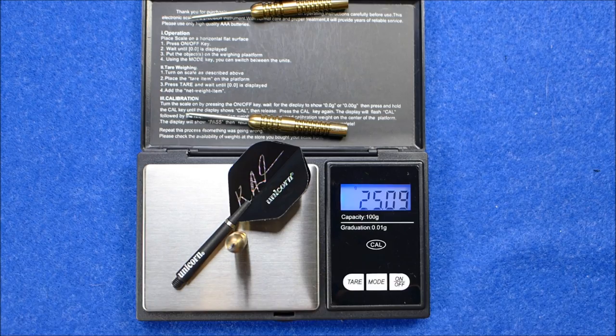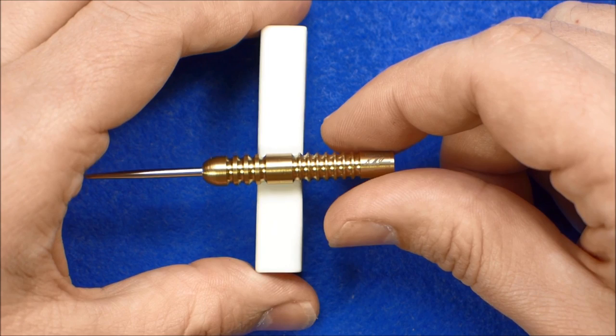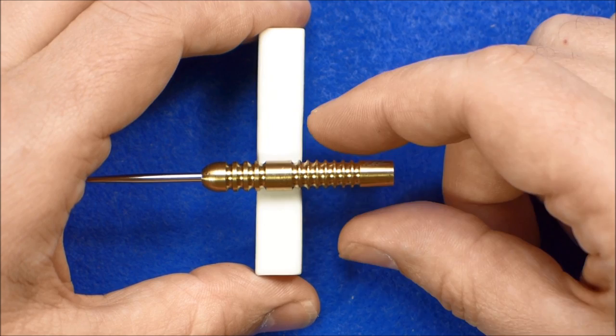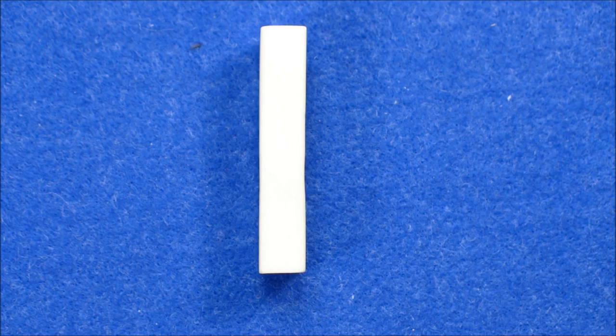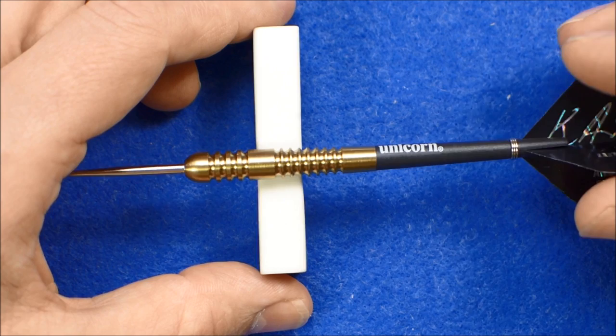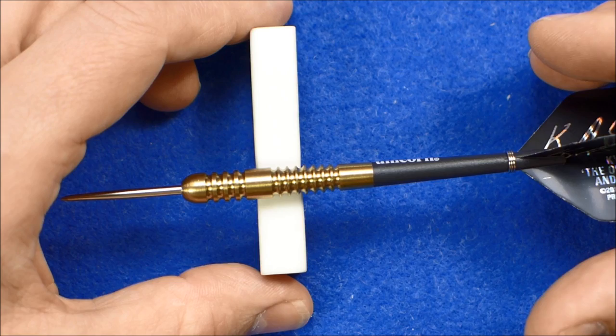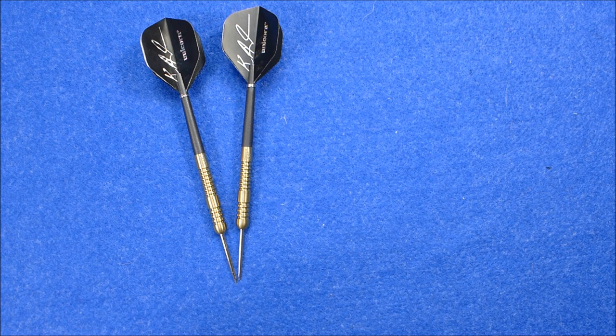The weight of the full setup as supplied is 25.09 grams. Let's see if we can find the balance point. It looks as if it's going to be somewhere near that wide ring at the front, I think it's about there, so it's front weighted as you would expect. With the full setup as supplied it's going to move a little bit past that ring, so it's just a little bit front of center with the supplied setup.